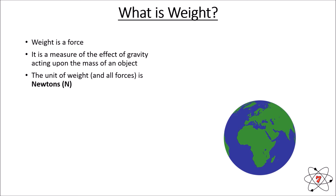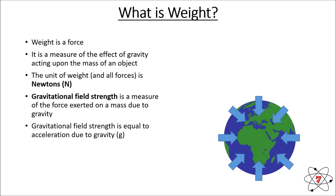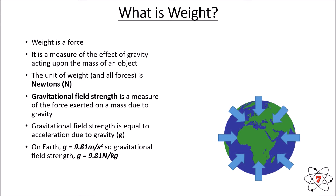The unit of weight — and in fact the unit of all forces — is newtons, or N. Gravitational field strength is a measurement of the force exerted on a mass due to gravity, and it is for all intents and purposes equal to the acceleration due to gravity. On Earth, gravity is equal to 9.81 meters per second squared, or we can round up to 10 meters per second squared. So the gravitational field strength on Earth is 9.81 newtons per kilogram.